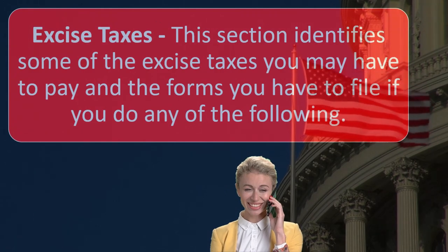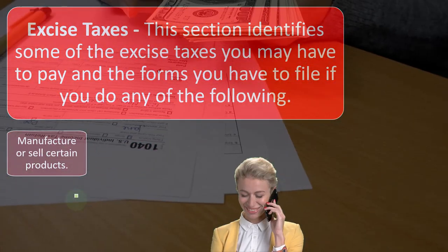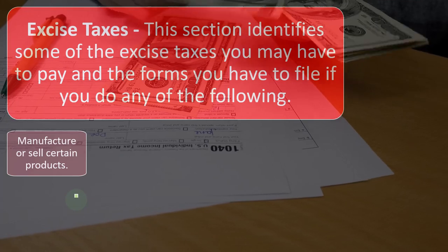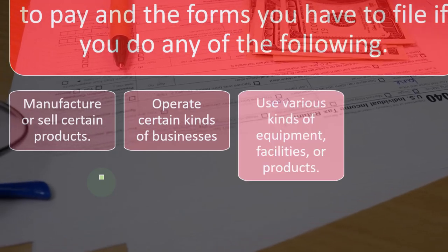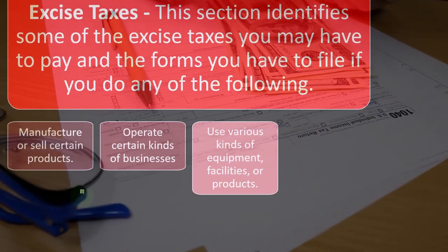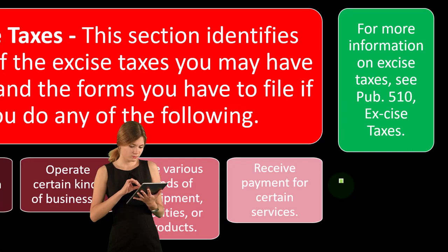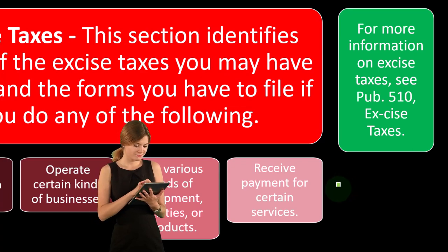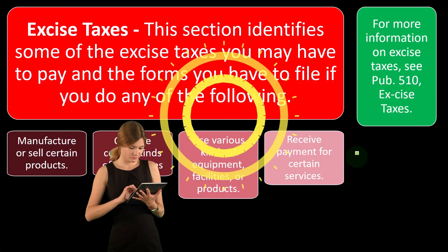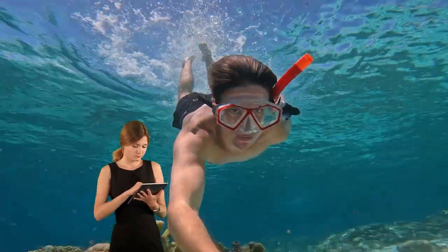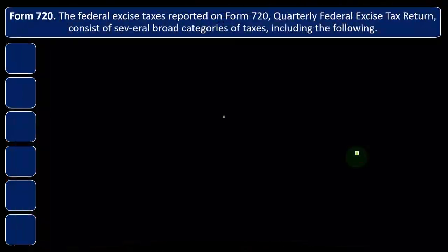This section identifies some of the excise taxes you may have to pay and the forms you have to file if you do any of the following: manufacture or sell certain products, operate certain kinds of businesses, use various kinds of equipment, facilities, or products, or receive payments for certain services. If you're subject to excise tax and you're in an industry that's subject to them, you want to dive into more detail. You can look at Publication 510 on the IRS website, irs.gov.